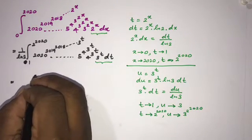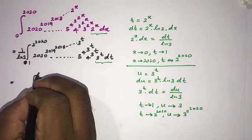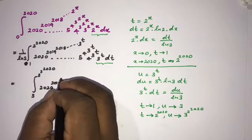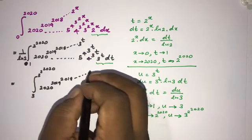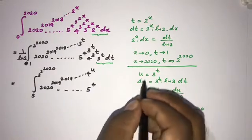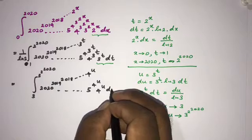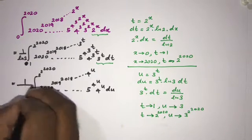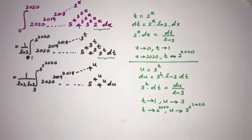Plugging in with the new limits 3 to 3 to the 2 to the 2020, the expression becomes 2020 to the 2019 to the 2018 continued, with 3 to the t replaced by u, so the previous term 4 becomes 4 to the u. The integral now contains 5 to the 4 to the u, with 3 to the t dt replaced by du over natural log of 3. We can write this as 1 over natural log of 3 times natural log of 2, outside the integral sign.